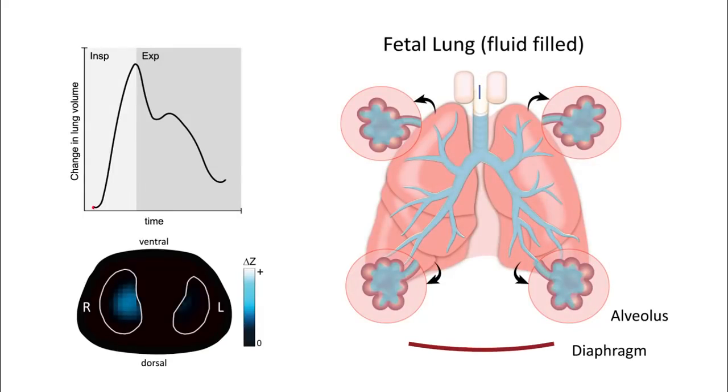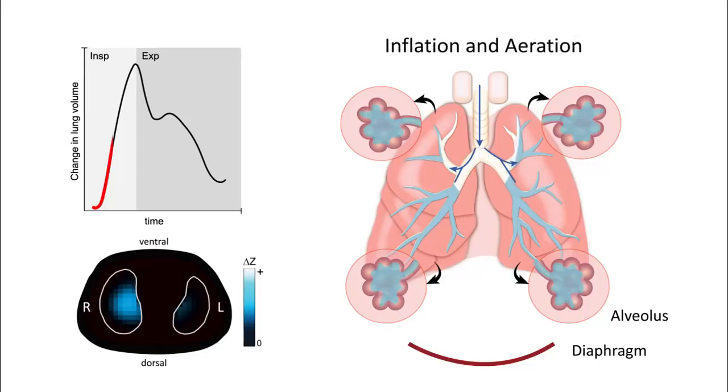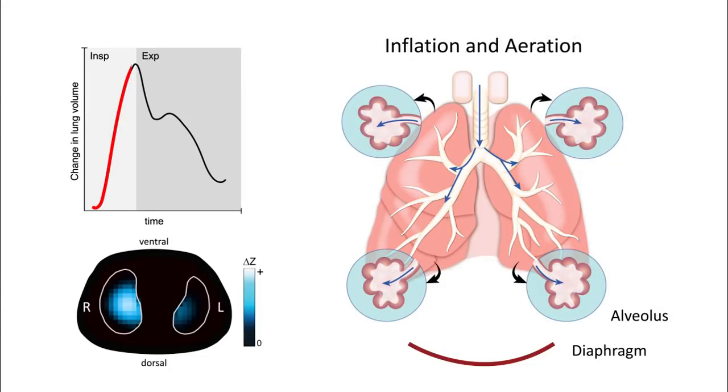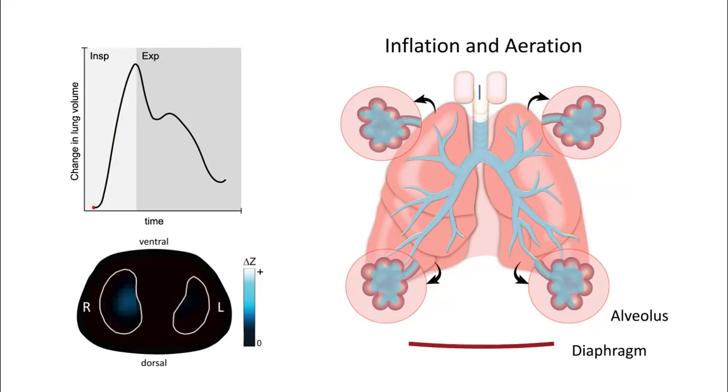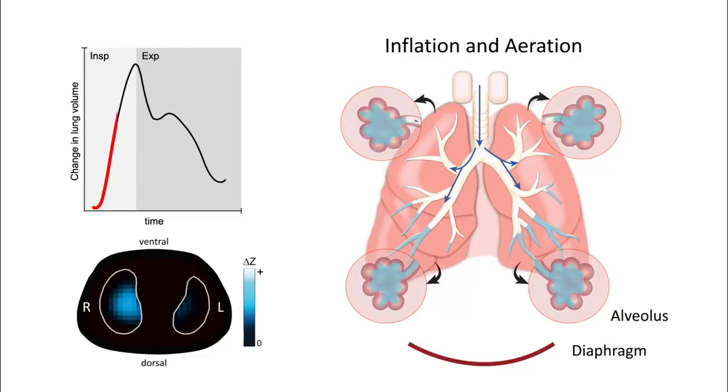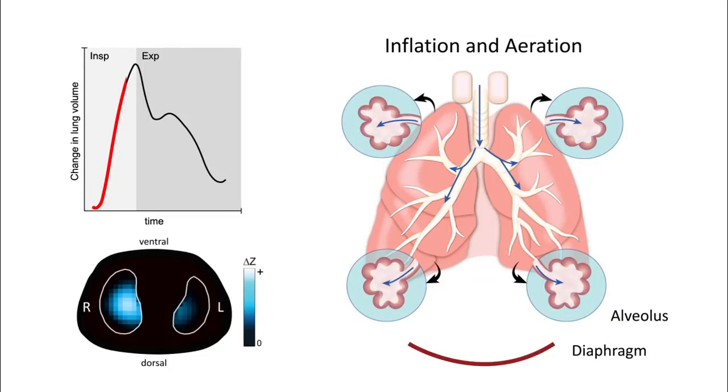At birth, the lung must rapidly fill with air to create the functional residual capacity needed to facilitate gas exchange without placental support. This is achieved by generating an inspiratory gas flow and intrathoracic pressure great enough to drive fetal lung fluid from the airways and alveoli into the lung interstitium. Until the interstitium has cleared this fluid, the neonate must defend this newly created functional residual capacity.